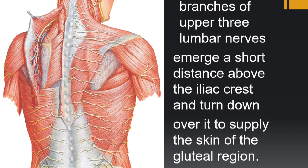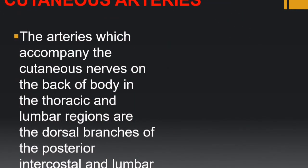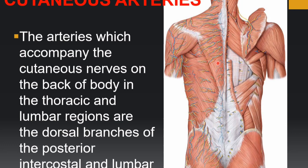The upper three lumbar nerves L1, L2, and L3 supply the skin of the back and also run over the iliac crest into the gluteal region, supplying skin over the gluteal region. The cutaneous arteries that accompany the cutaneous nerves on the back are the dorsal branches of the posterior intercostal arteries in the thoracic region, and the lumbar arteries in the lower lumbar region.